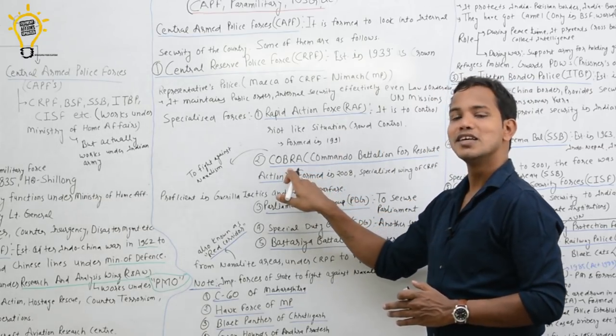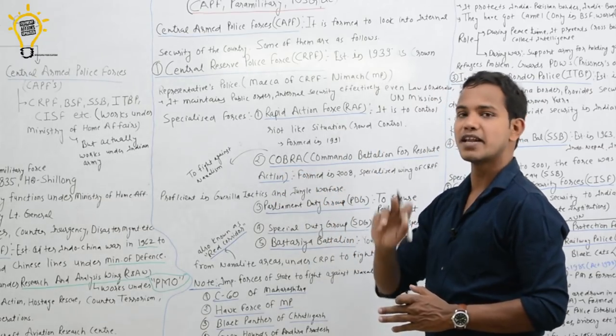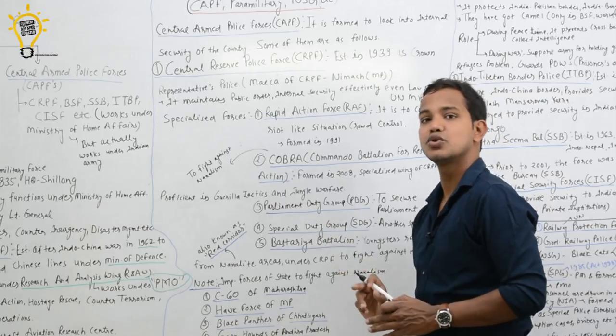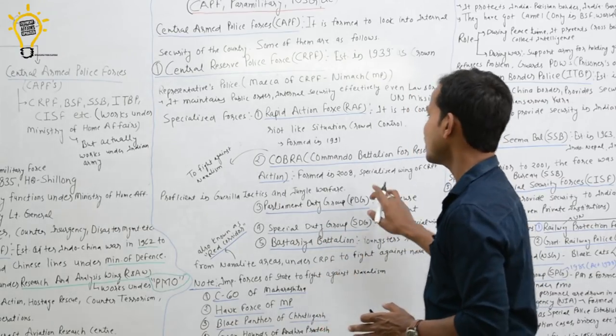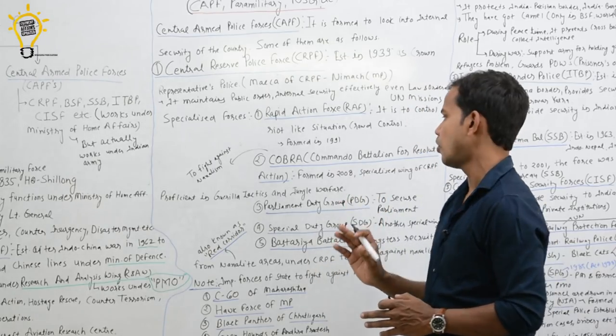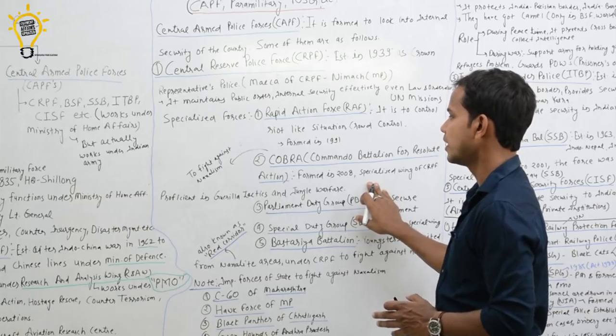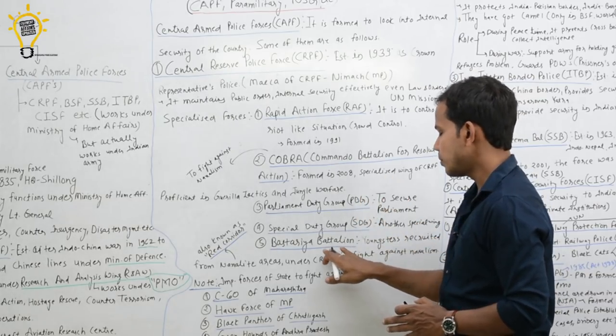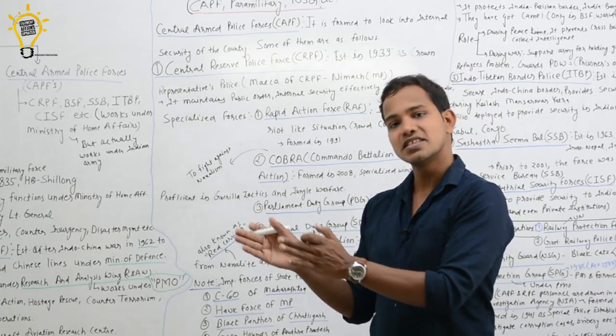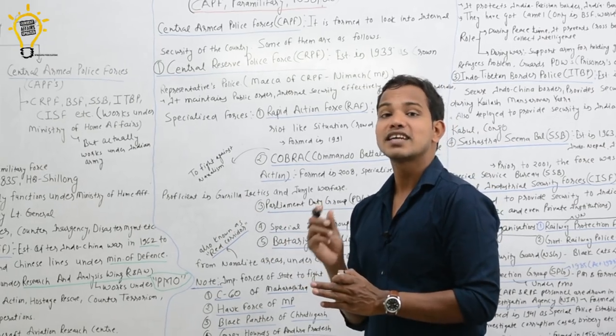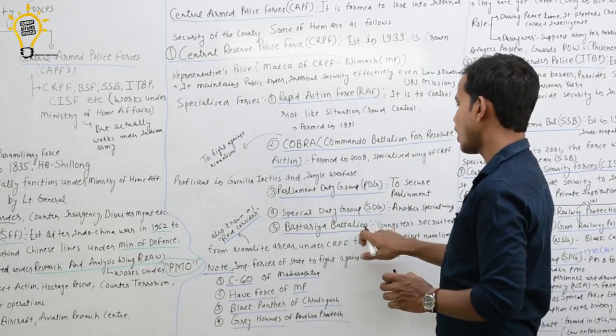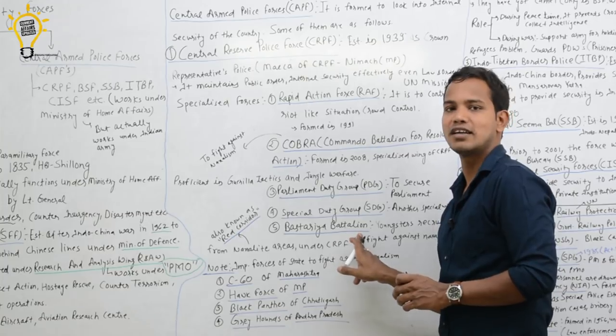Another one is Cobra - specialized commandos who were mainly created to fight naxalites. Cobra stands for Commando Battalion for Resolute Action, which is a specialized wing of CRPF. Created in 2008, mainly very proficient in guerrilla warfare and jungle tactics. Apart from this, recently CRPF has also created a Bastariya Battalion. Bastariya Battalion means youth specially recruited from Bastar area or naxalite area, the red corridor. They are recruited from there, trained, and now they are also helping us out to control naxalism in the country.